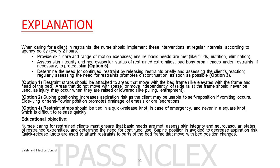Option 5. Determine the need for continued restraint by releasing restraints briefly and assessing the client's reaction. Regularly assessing the need for restraints promotes discontinuation as soon as possible. Option 3. Option 1: restraint straps should be attached to areas that move with the bed frame, like areas that elevate with the frame and head of the bed. Areas that do not move with, or move independently of, the side rails and frame should never be used, as injury may occur when they are raised or lowered, like pulling or entrapment. Option 2: supine positioning increases aspiration risk as the client may be unable to self-reposition if vomiting occurs. Side-lying or semi-Fowler position promotes drainage of emesis or oral secretions. Option 4: restraint straps should be tied in a quick-release knot in case of emergency, and never in a square knot, which is difficult to release quickly.